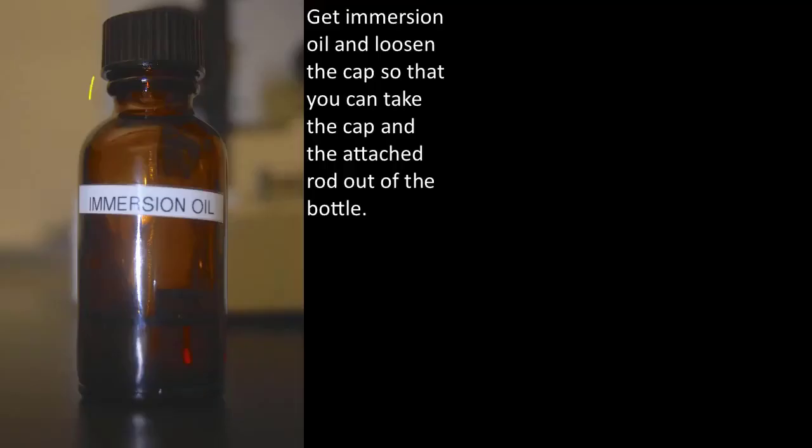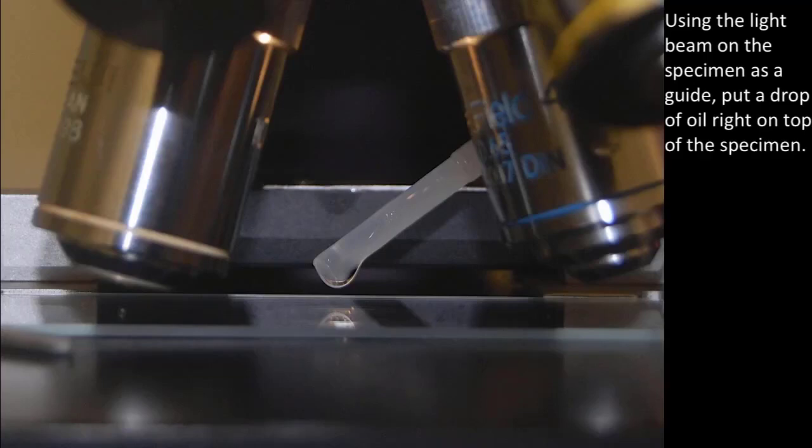Get immersion oil and loosen the cap so that you can take the cap and the attached rod out of the bottle. Using the light beam on the specimen as a guide, put a drop of oil right on top of the specimen.